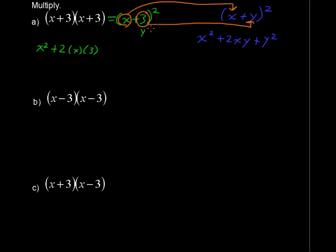You can just think of it instead of x and y, I like to say first and second term, and then plus 3 squared, and then of course you can simplify that as x squared plus 6x plus 9, and you'd get the same thing if you foiled.